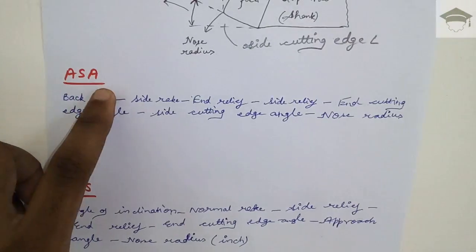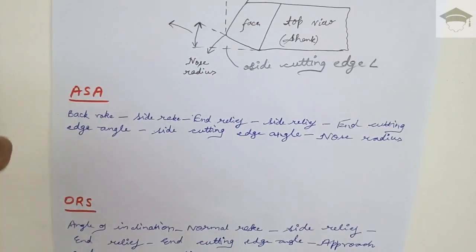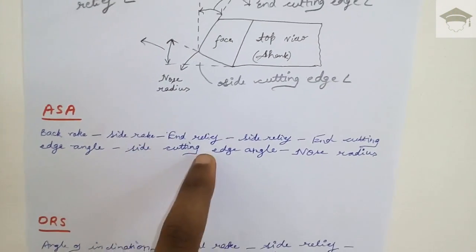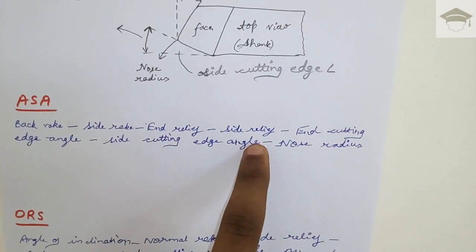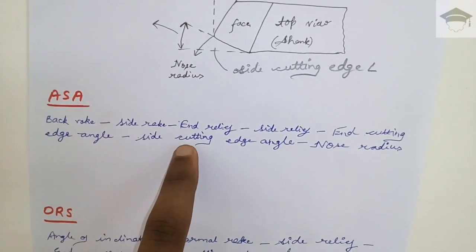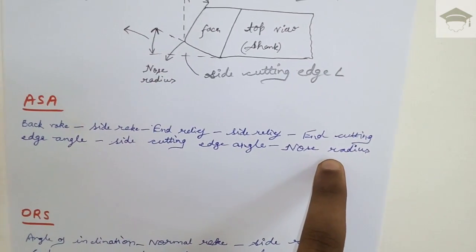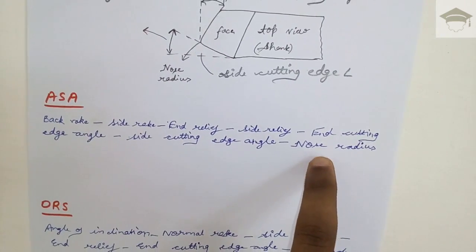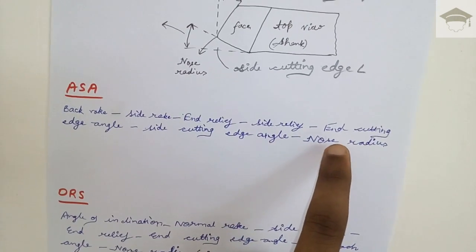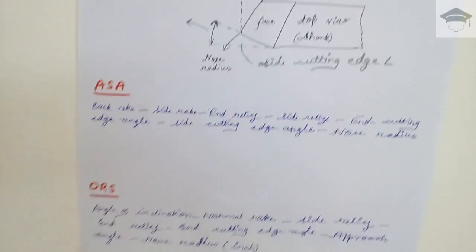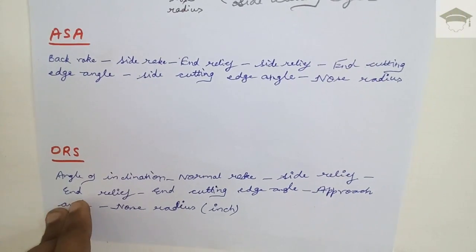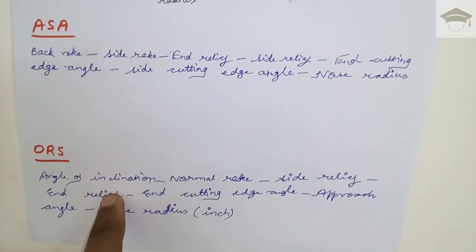In the ASA system, we write: first the back rake angle, then the side rake angle, then the end relief angle, then the side relief angle, then the end cutting edge angle, then the side cutting edge angle, and finally the nose radius. The nose radius is mentioned in mm or meters.